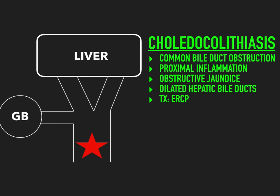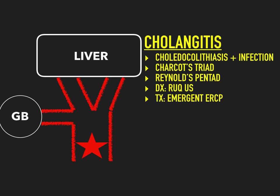The last biliary disease process is cholangitis, also called ascending cholangitis. This is when you have a choledocholithiasis and then you get an infection — that's why choledocholithiasis needs to be treated promptly with ERCP, because it can progress to cholangitis. It's called ascending cholangitis because the stone gets lodged in the common bile duct and the backed-up fluid creates a nidus for infection, which then ascends up the biliary tree causing inflammation in everything proximal to the obstruction.